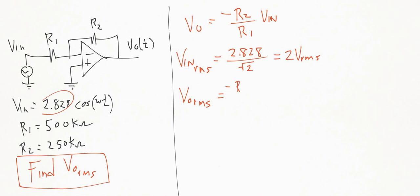negative R2 over R1 times, now we have the VRMS, or VN RMS.